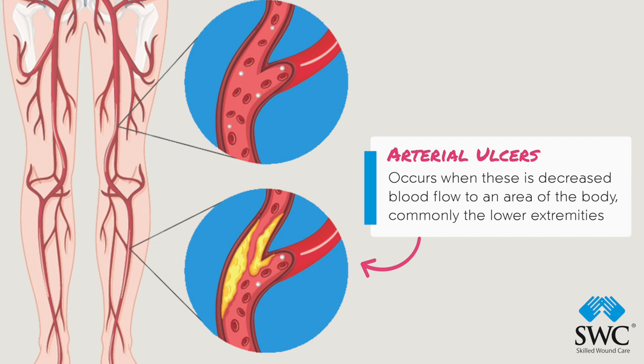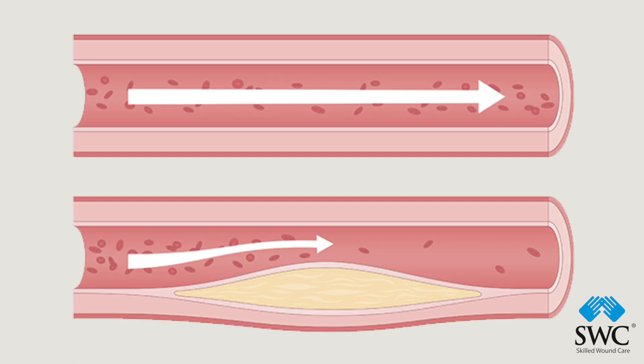An arterial ulcer or wound occurs when there is decreased blood flow to an area of the body, which is most commonly the lower extremity in patients with peripheral arterial disease. Arterial disease develops over time from the same risk factors that lead to heart disease: smoking, hyperlipidemia, diabetes, and other diseases lead to arterial disease and hardening and narrowing of peripheral arteries.